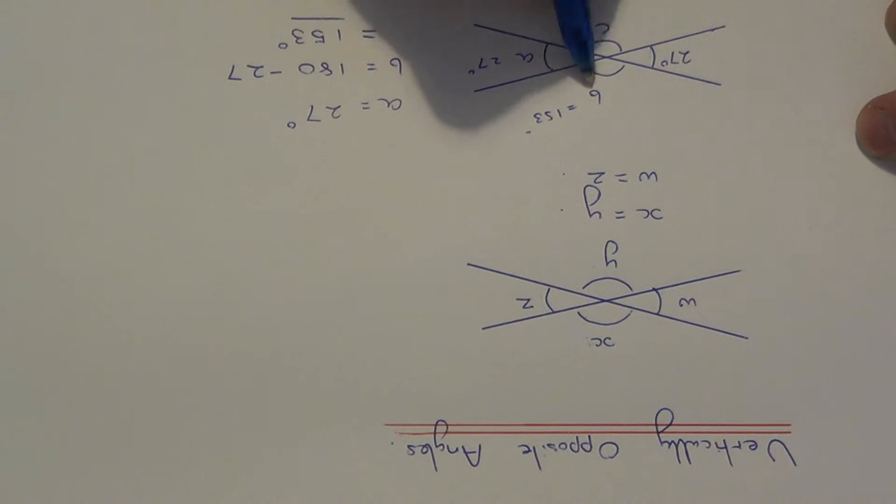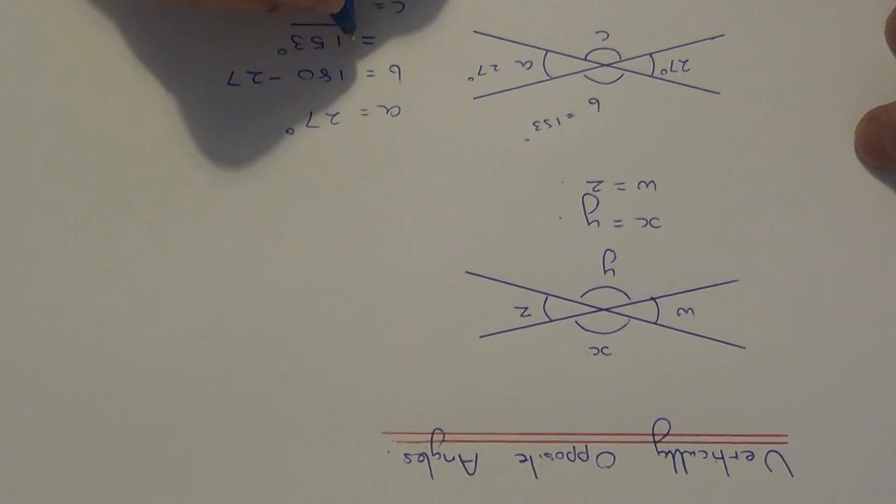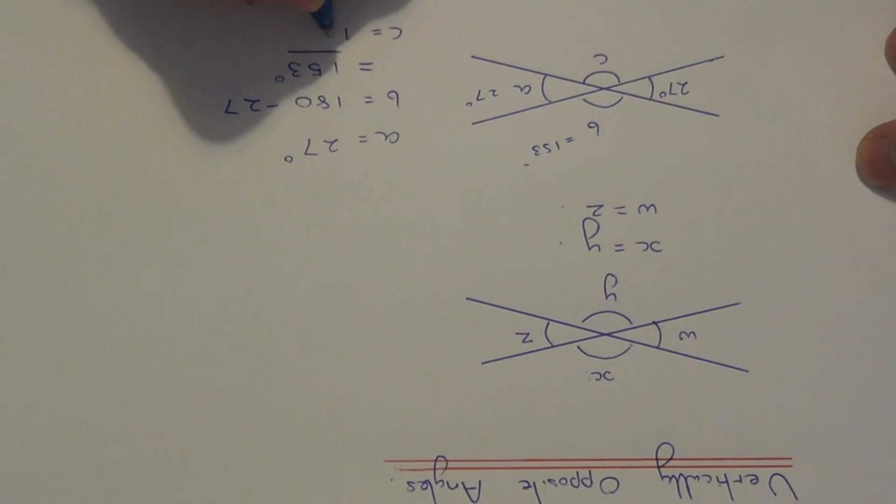So again, angle C now will be quite easy to do because angle C is opposite 153. So again, we have vertically opposite angles. So angle C is 153 degrees.